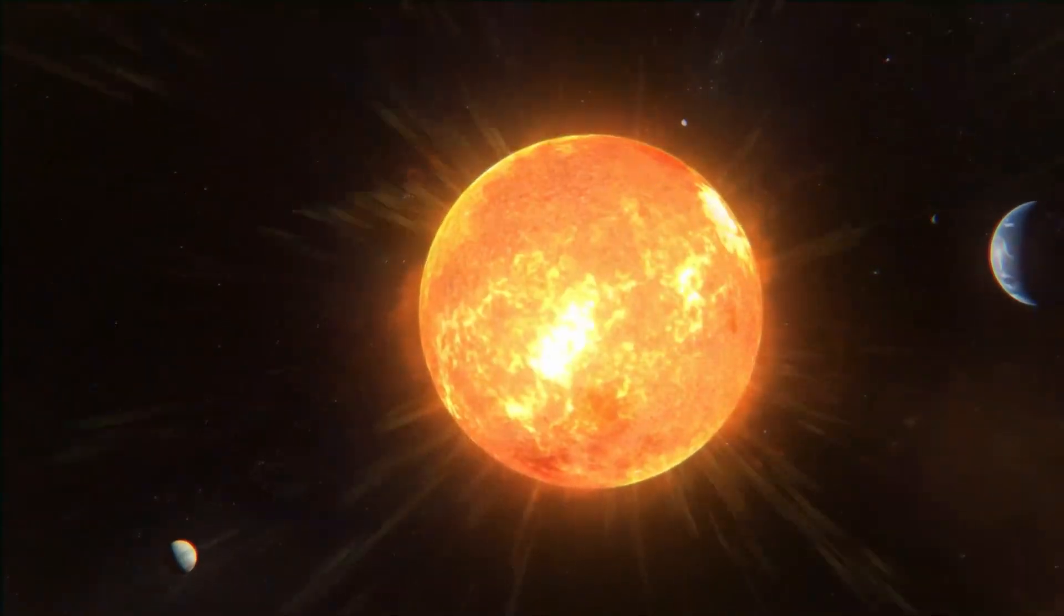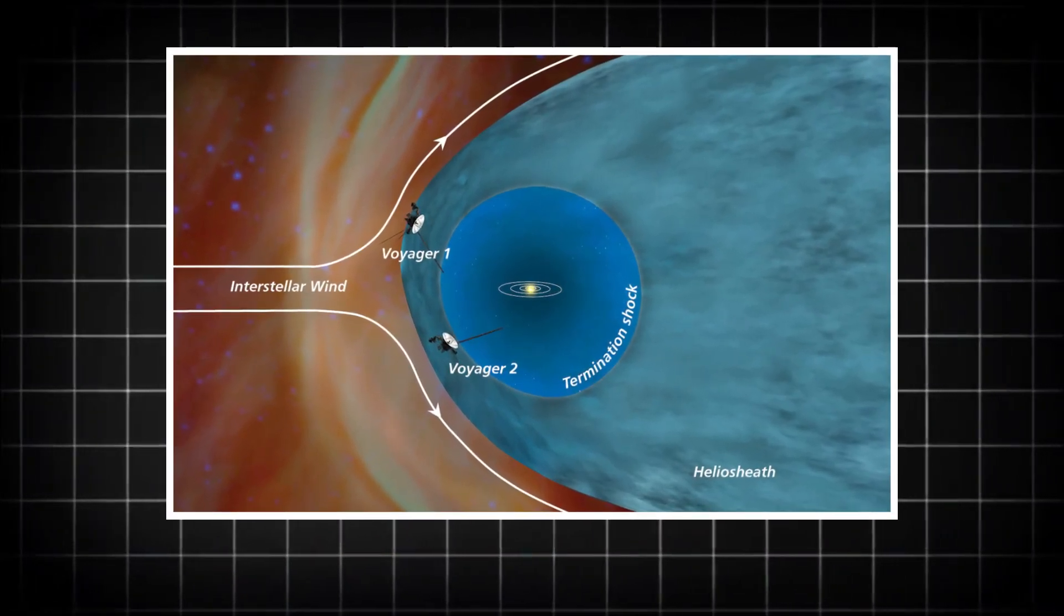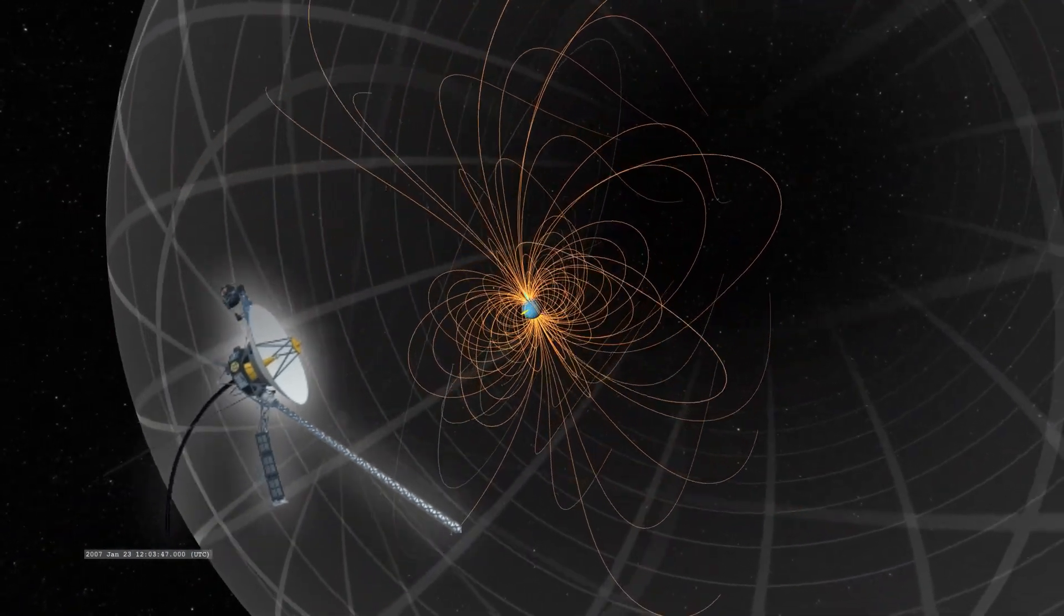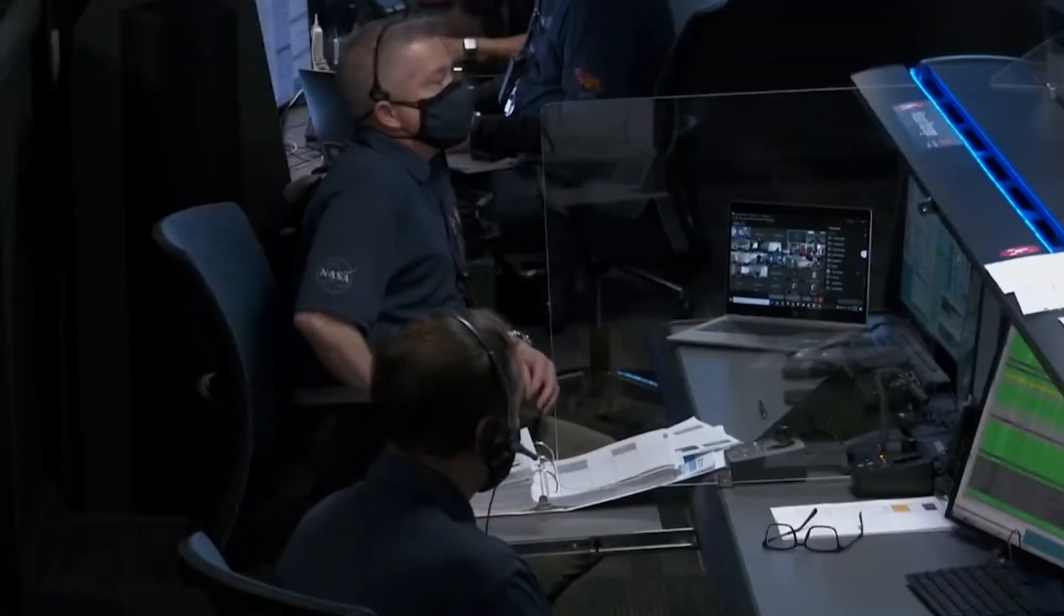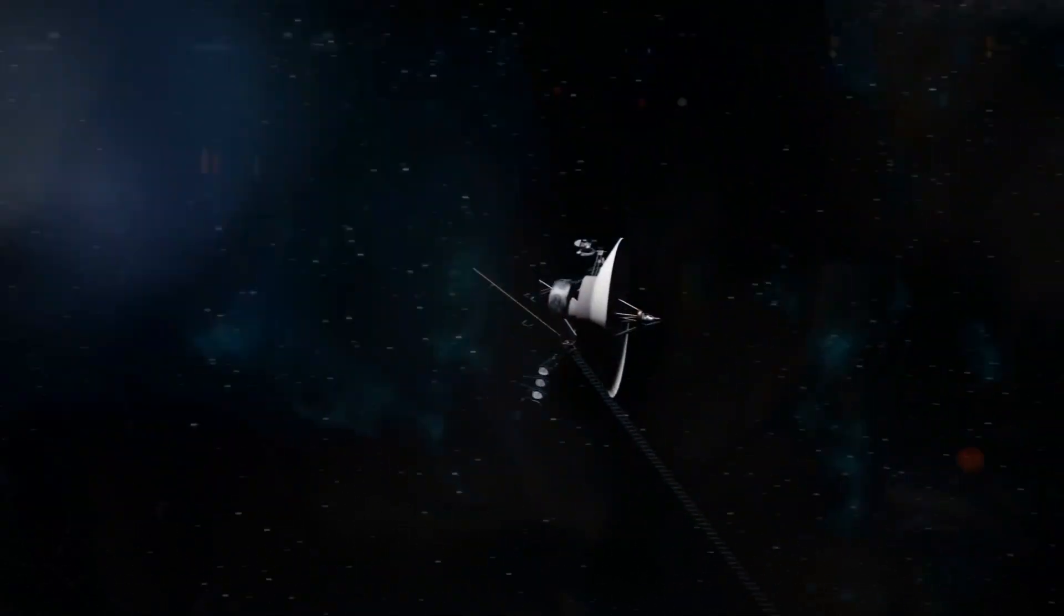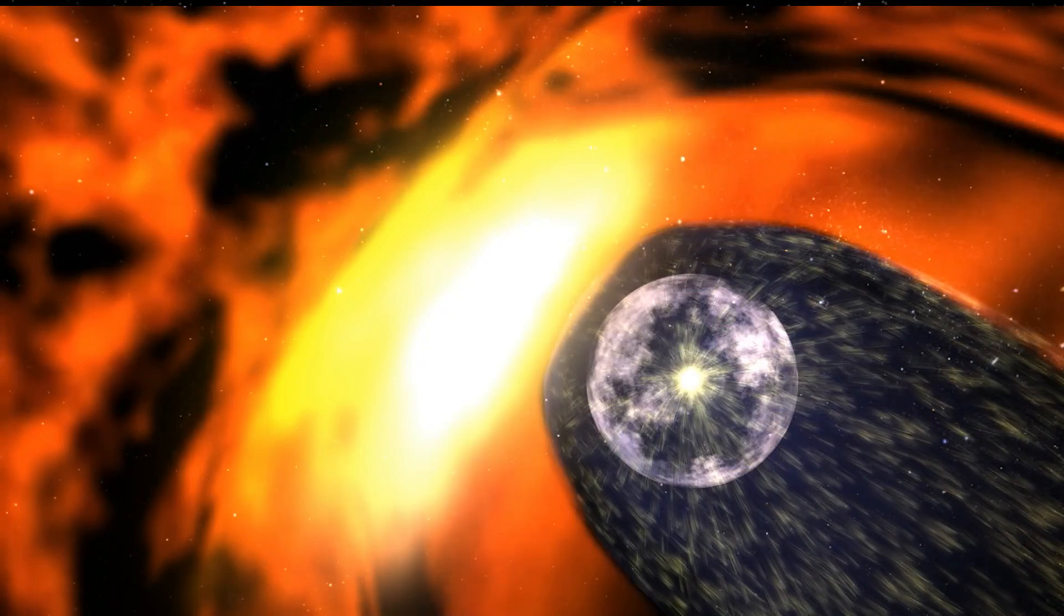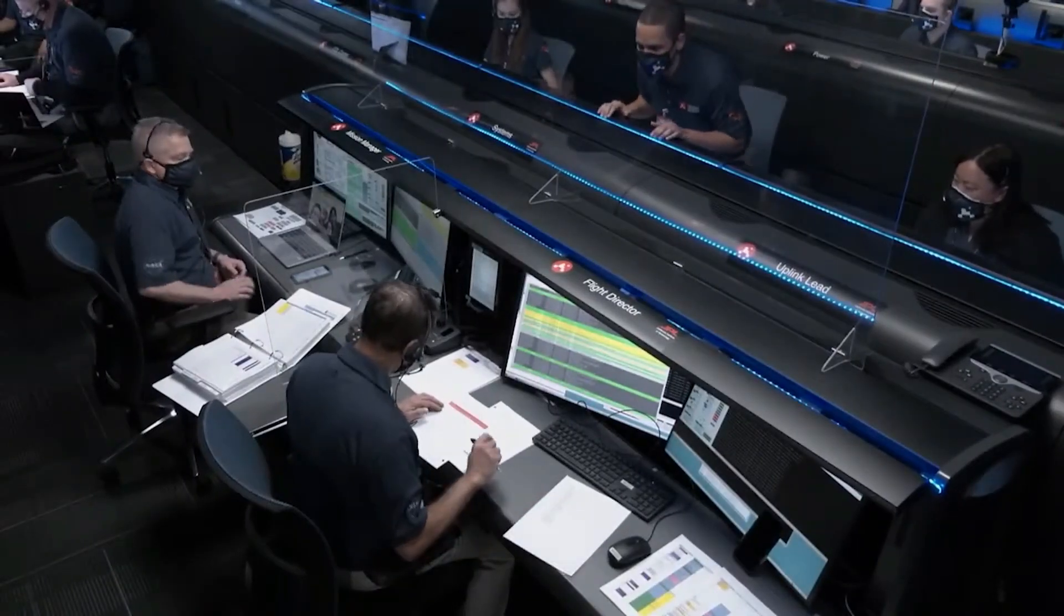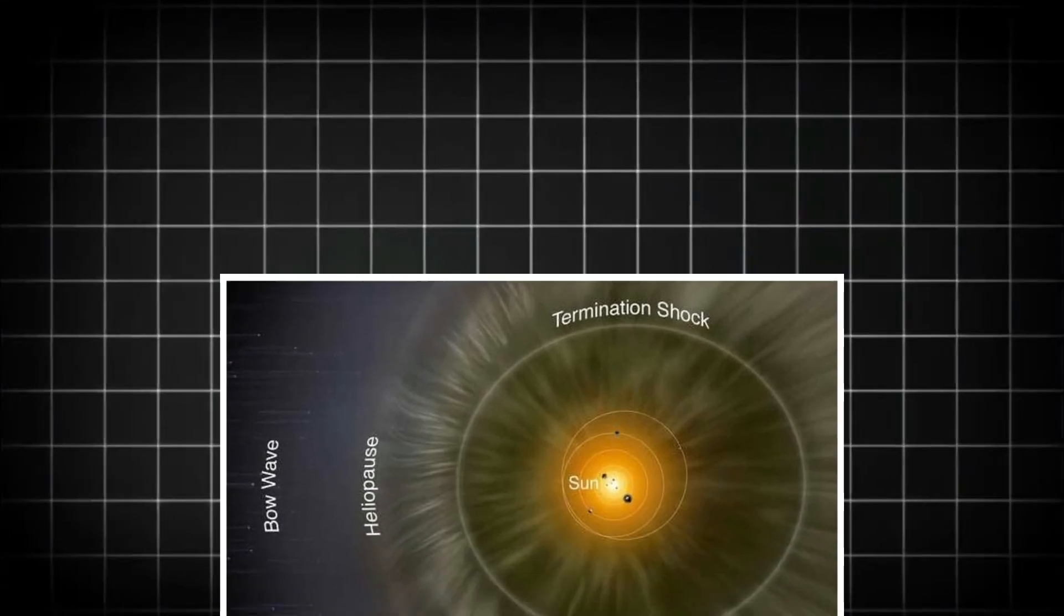While Voyager continues to send back valuable data, it's still unclear what it's encountering, because what it's finding defies everything we knew about interstellar space. The space beyond the solar system is far from the calm, empty void predicted by scientists. In fact, Voyager's instruments have detected fluctuating magnetic fields, strange radiation patterns, and phenomena that suggest the presence of previously unknown forces and bodies. These unexpected communications with objects that weren't even supposed to exist have left researchers scrambling to find explanations.